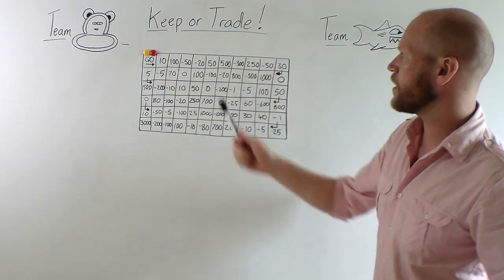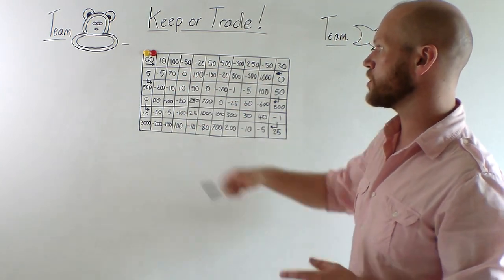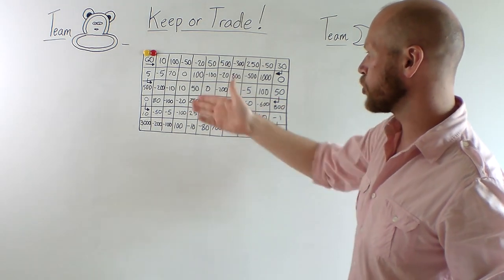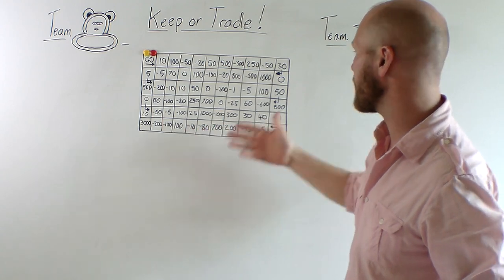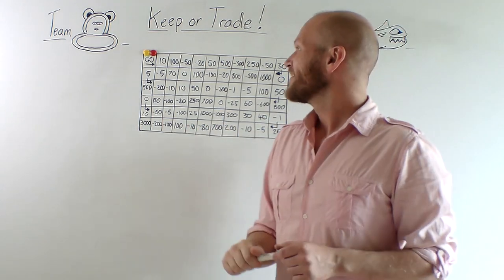Fill your board with different amounts of numbers. So here we have 10, 100, bye-bye 50, hello 250, bye-bye 600, or minus 600.